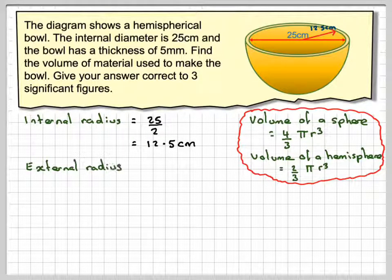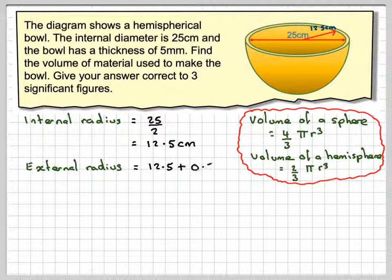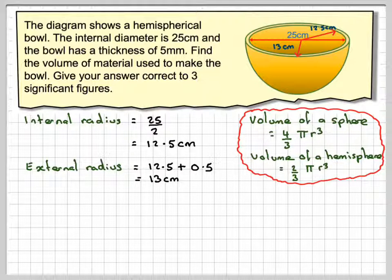And the external radius is going to be 12.5 plus 5 millimeters. Now 5 millimeters is half a centimeter, so we make sure the units are consistent, so it's 12.5 plus 0.5, which is 13 centimeters, so the distance from here to the outer edge here will be 13 centimeters.